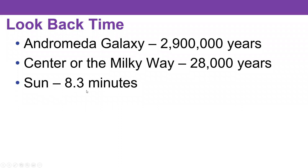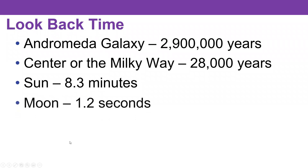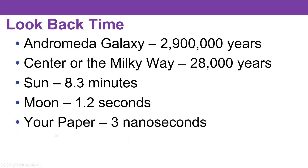And the sun is 8.3 light minutes away. And even when you're looking at the moon, you're seeing how it was 1.2 seconds ago. And if you're looking at the screen right now, you're seeing the screen how it was three nanoseconds ago. So it does take a finite amount of time for the light to get from the screen to your eyeball.